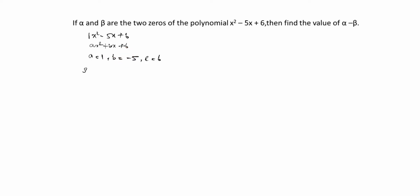What is the sum of zeros formula? Alpha plus beta is equal to minus b by a. What is minus b by a? b is minus 5, so you write minus of minus 5 by 1. A is 1. Minus minus gives plus, so 5 by 1 is 5. Therefore, alpha plus beta is equal to 5.